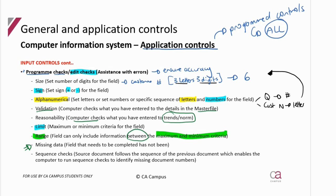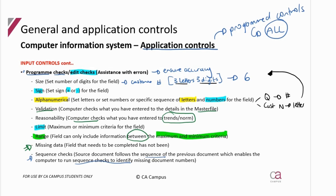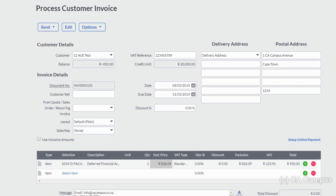They perform the same function, but the difference is that a screen aid shows you on screen, whereas missing data doesn't — but as soon as you don't complete it, it lets you know. Finally, sequence checks: all source documents must be in a sequence, following on from the previous. This is pre-numbering, and then the computer can run its own checks to identify missing documents. I'll show you on screen that there is a number assigned to the document that cannot be manipulated. It's pre-numbered, and then the system can run a sequence check to make sure that the next invoice follows on from the previous.